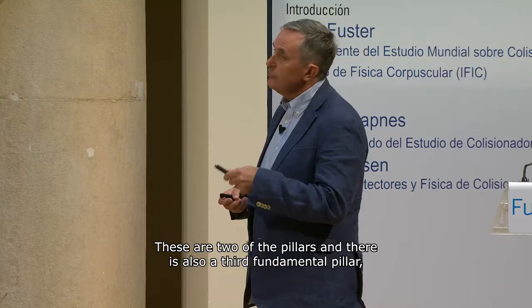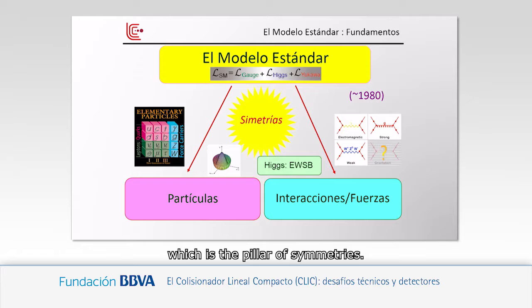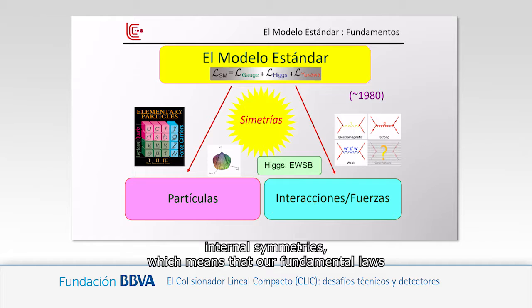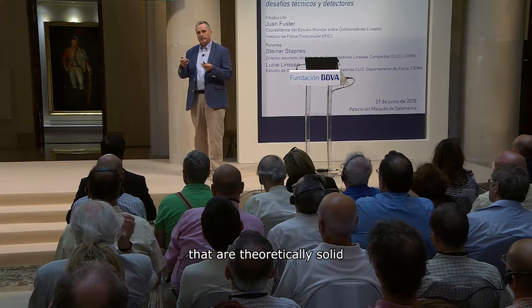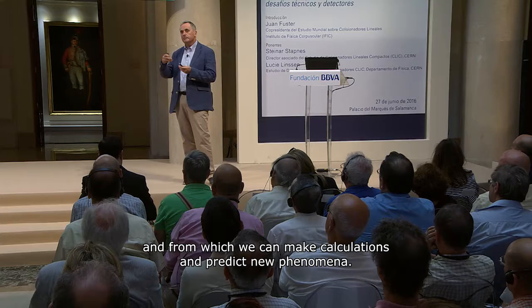There is also a third pillar, which is symmetry. The standard model bases all its dynamics — all its interactions — on internal symmetries, meaning that our fundamental laws are invariant under certain types of transformations. This is fundamental for building theories that are solid, in which we can calculate and predict new phenomena.